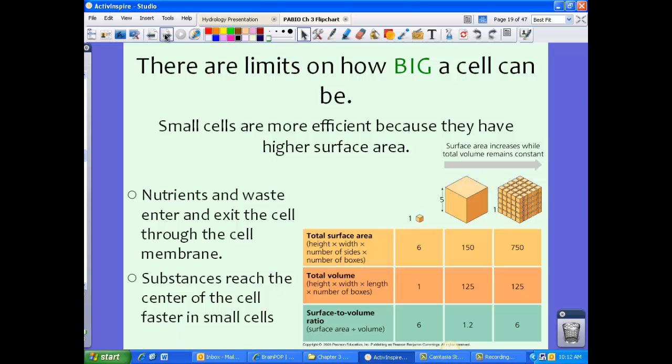There are limits on how big a cell can be. Small cells are more efficient because they have higher surface area. The nutrients and waste enter and exit the cell through the cell membrane. Remember, it's selectively permeable. And substances reach the center of the cell faster in small cells.